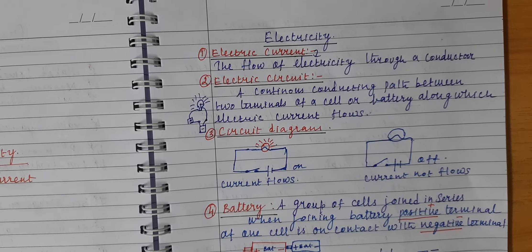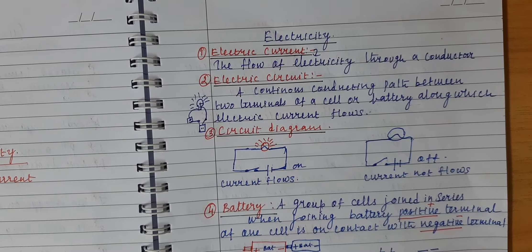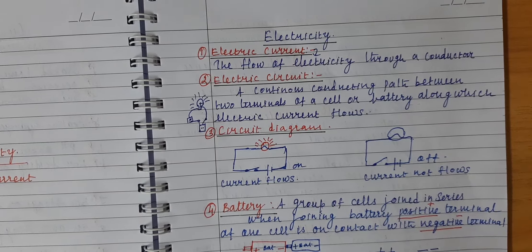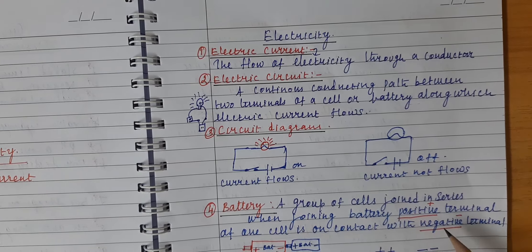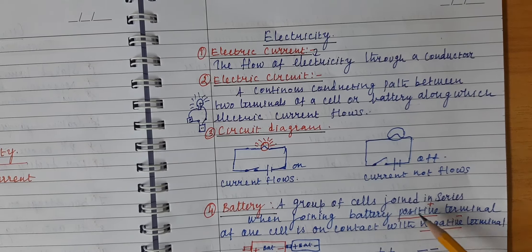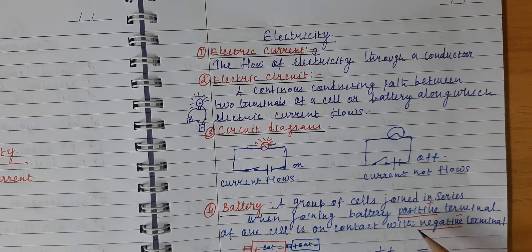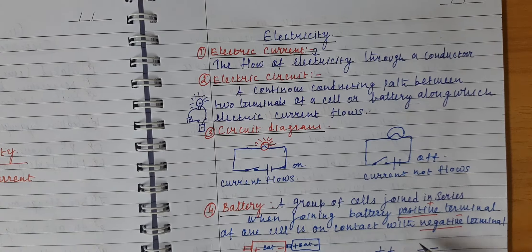Electricity and electric current. In this video, we will cover: what is electric current, what is electric circuit, circuit diagram, what is the use of fuse, miniature circuit breakers, electromagnets, electric bell, and what is the principle used in electric bell.